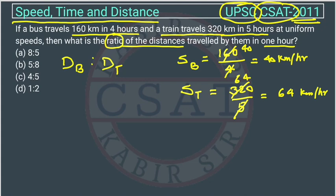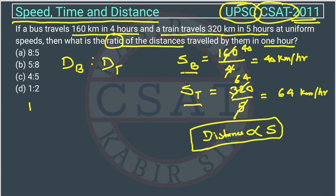We have speed of bus and train both and we know that the distance, that distance is proportional to the speed, if time is constant. So, the ratio of speed will be equal to the ratio of distance.